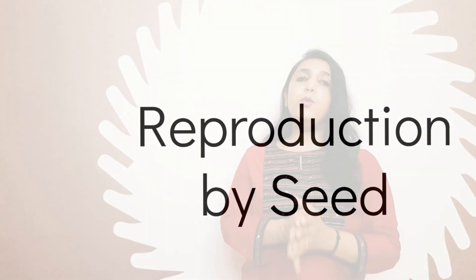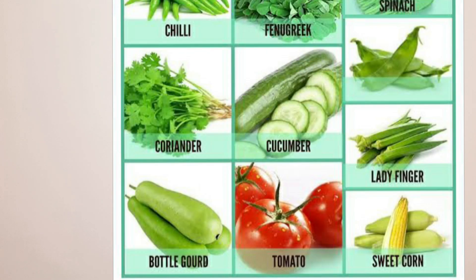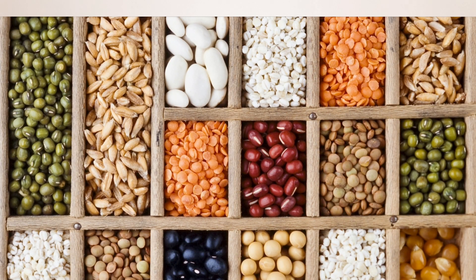Now coming to the most common way of reproduction in plants — that is seeds. Most plants like apples, oranges, mango, cucumber, okra, and eggplant all grow from seeds.